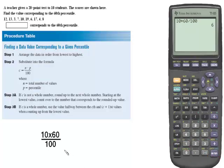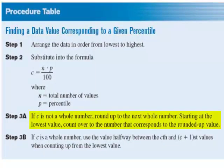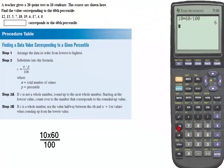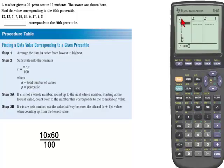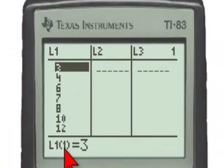The procedure then says, if C is not a whole number, round up to the next whole number and starting at the lowest value, count over the number that corresponds to the rounded up value. In other words, if we had gotten 6.2, we'd go up to 7 and then count the 7th entry in the ascending order. We'll go back to stat enter, and we would count up to the 7th value, looking at L1, the 7th entry.